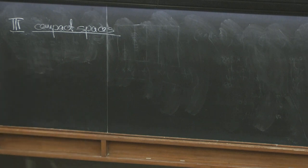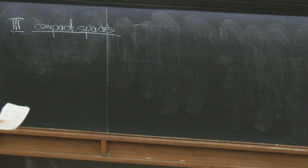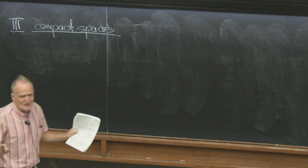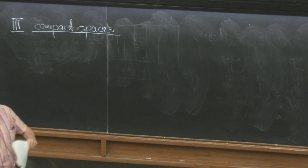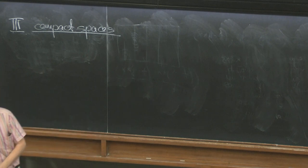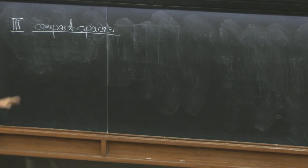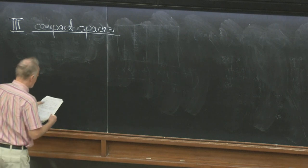So we go back to basic definitions. The second chapter was connected; here we have even more possibilities to define compactness: limit point compact, sequentially compact, countably compact, and so on. There are many more notions here than for connectedness.